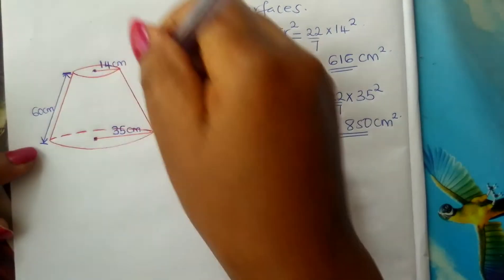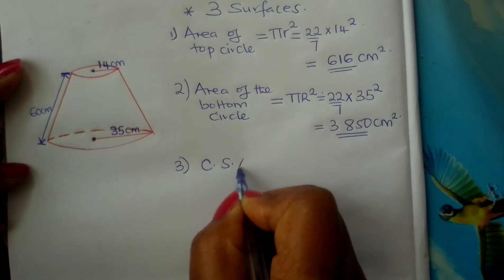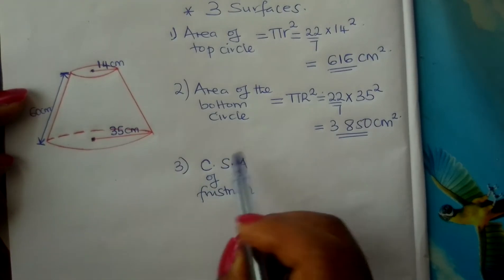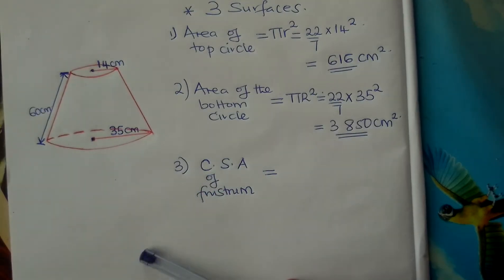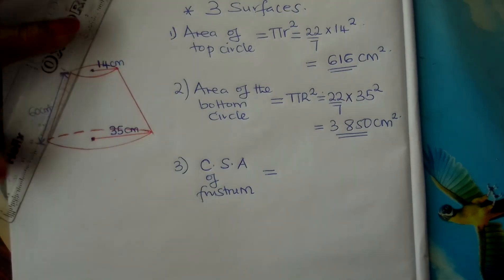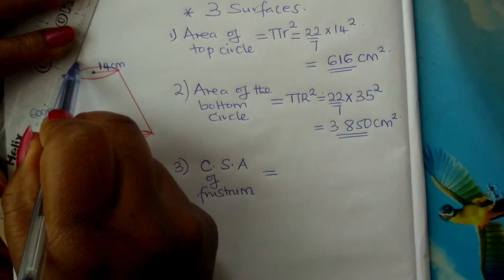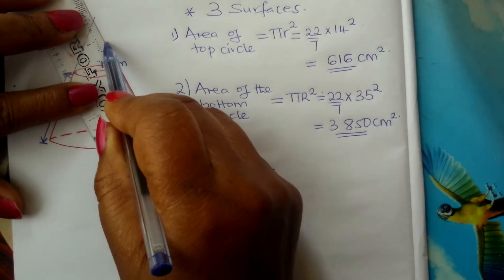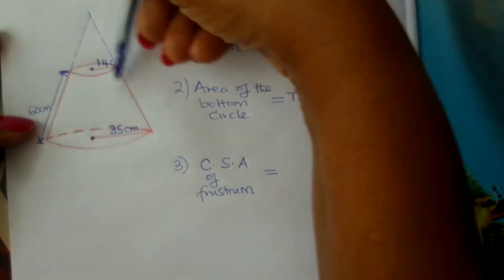Now we go to the third step: what is the curved surface area of our frustum? To get the curved surface area of a frustum, we have to complete the frustum to get the original cone from which this frustum was cut. We do this by producing the slant sides until they meet at the apex, giving us the original big cone.